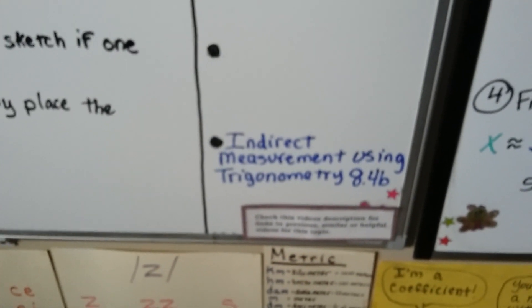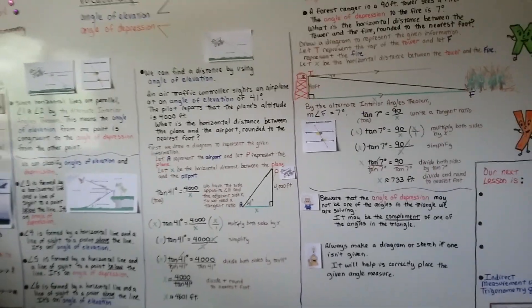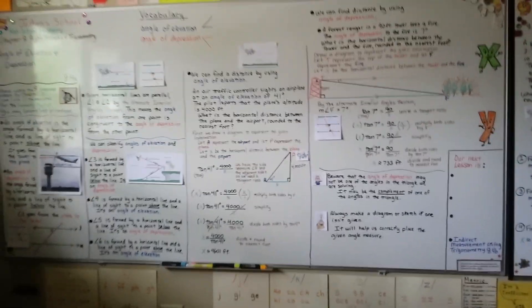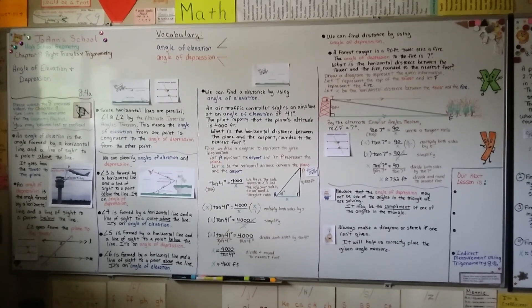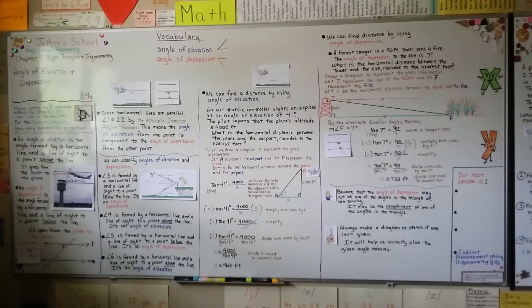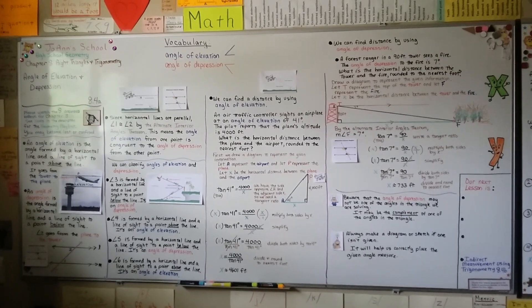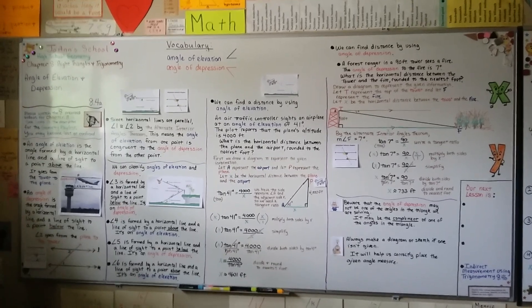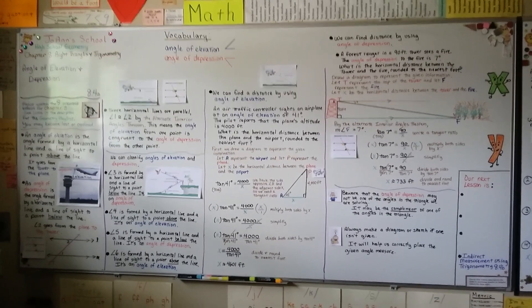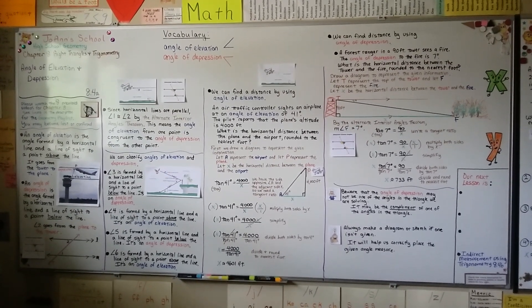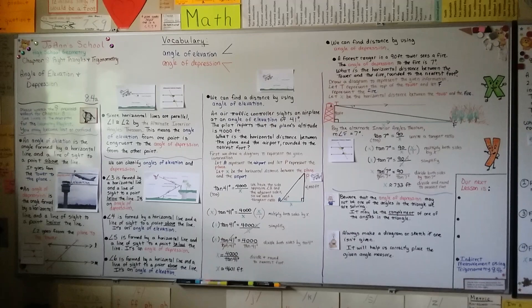Our next lesson is indirect measurement using trigonometry, 8.4b. If any of this was confusing, play the video again — like seeing a movie a second time, you notice things you missed the first time. Or go back and watch the previous videos to catch up on tangent, cosine, and sine. Hope you have a great day, and I'll see you next time!